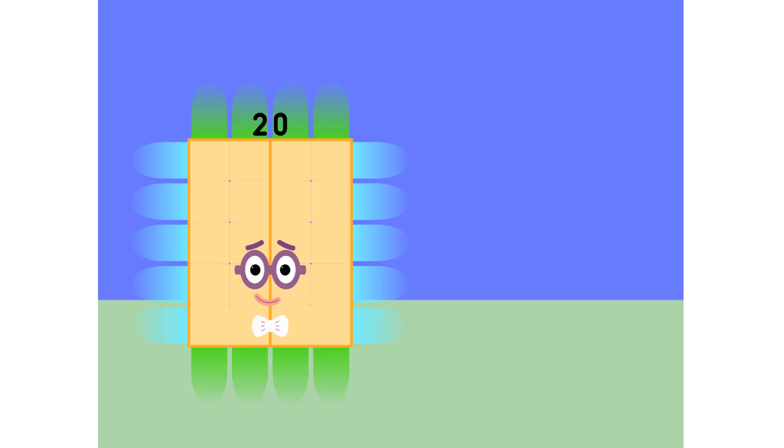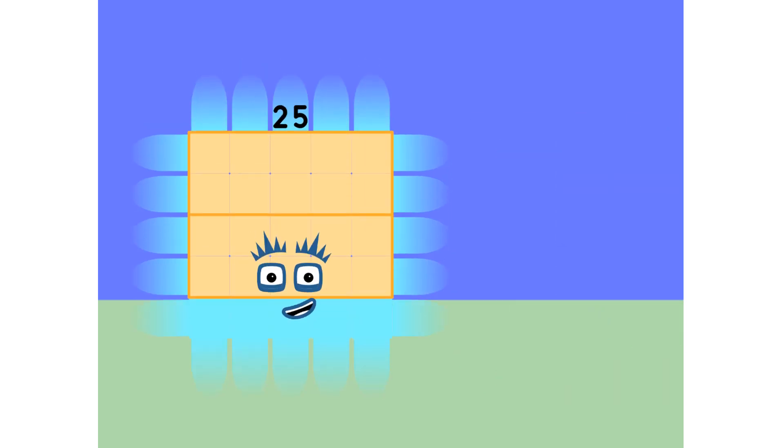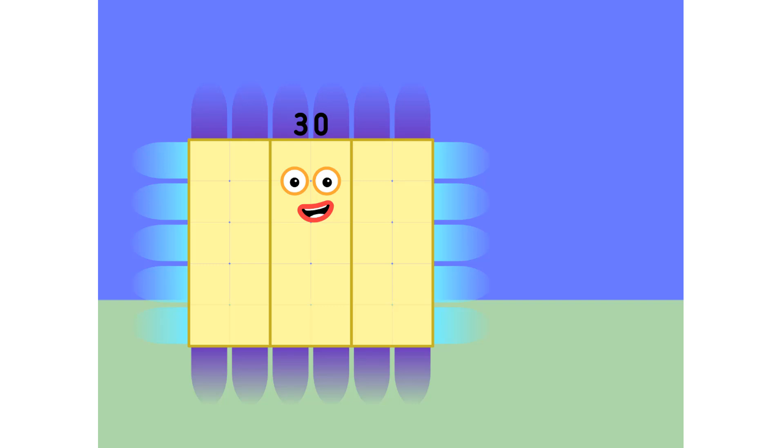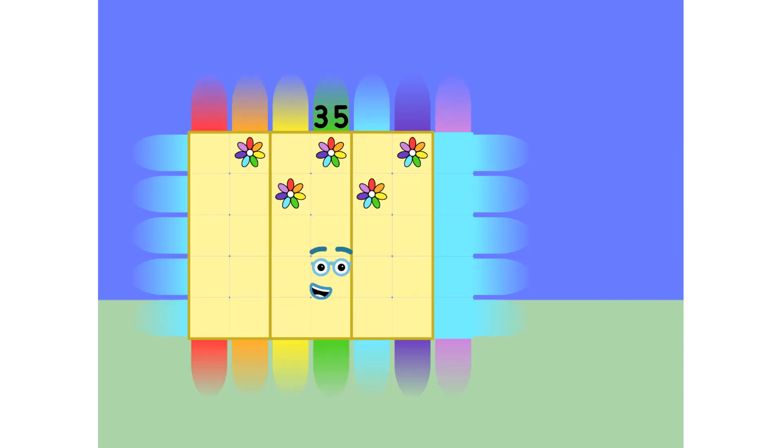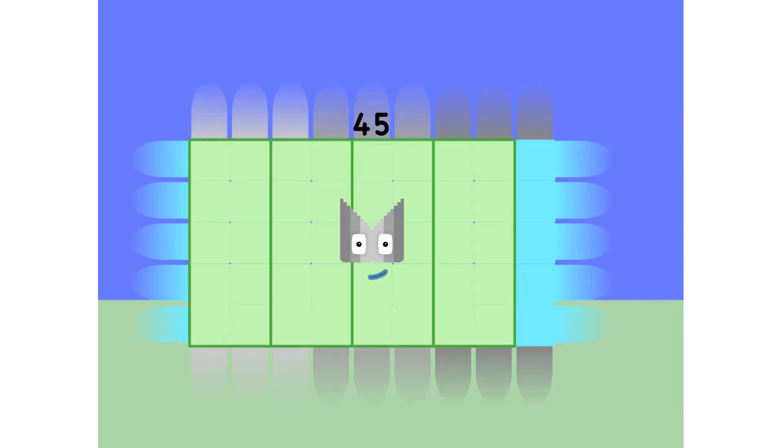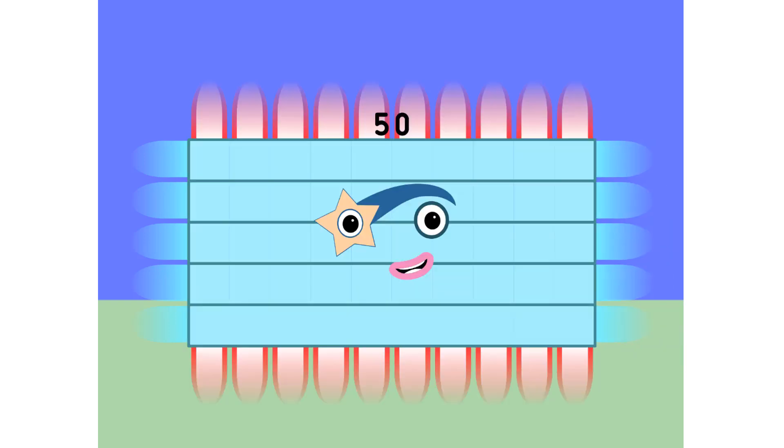4 5s are 20, 5 5s are 25, 6 5s are 30. You know who you are. 7 5s are 35, 8 5s are 40, 9 5s are 45. And here's the next big super stop: 10 5s are 50.